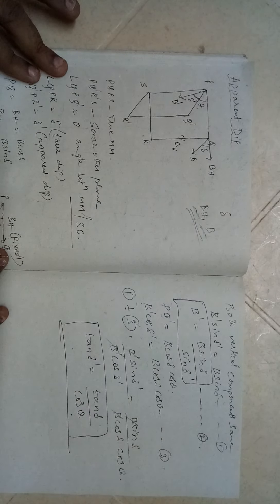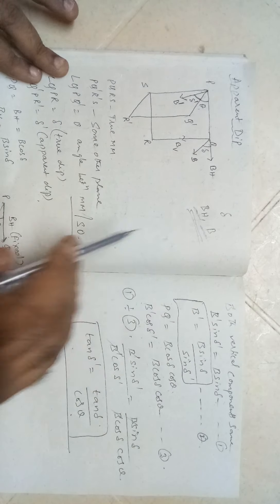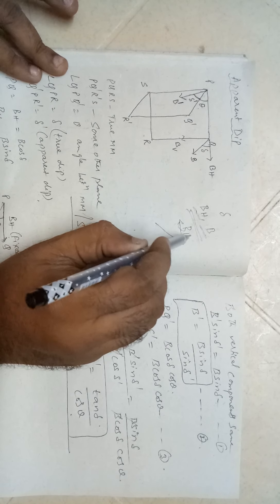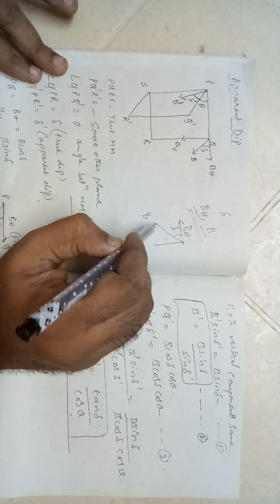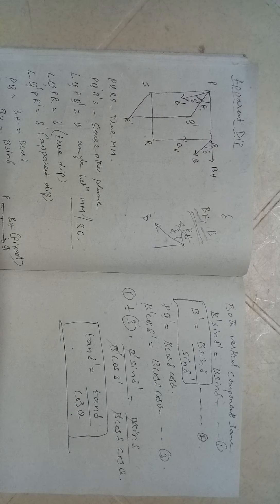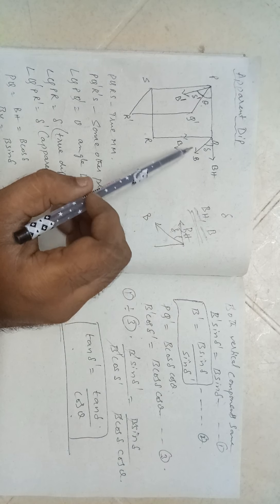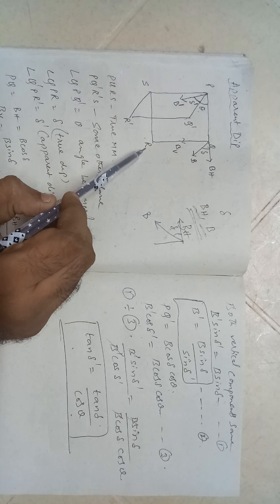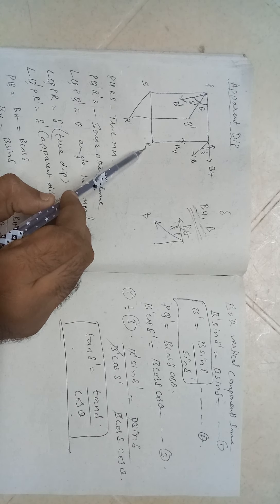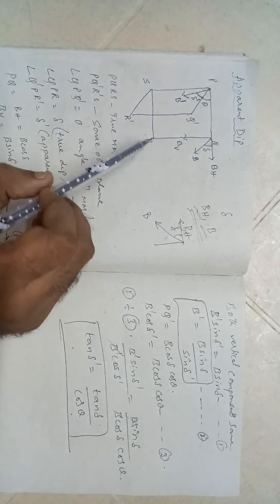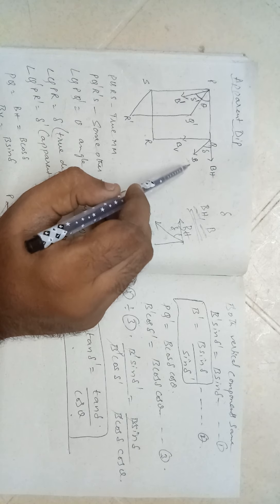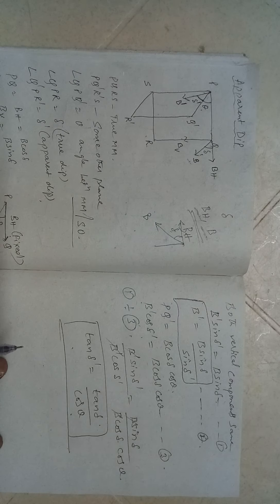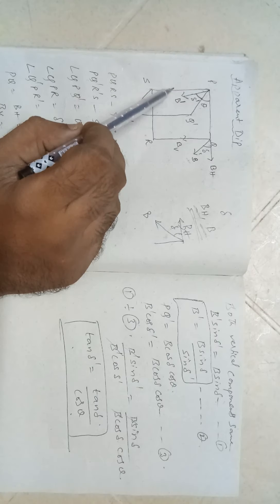Now, dip is always the angle between the horizontal component and the total Earth's magnetic field. This is the true dip. If you draw the diagram like this — this is BH, this is B — this angle is my dip. In this diagram, angle QPR is my true dip. For clarity, I am drawing a parallel line; this is my real magnetic field direction, and this angle is the true dip.